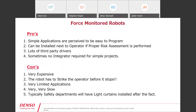Some pros to force-monitored robots: simple applications are perceived to be easy to program, they can be installed next to an operator if the proper risk assessment is performed, there are lots of third-party drivers, and sometimes no integrators are required because it's supposed to be a simple setup. The cons: they can be very expensive, the robot has to strike the operator before it stops, there are limited applications, and with heavy-payload robots you have to move very slowly because at that size hitting at any speed can cause damage. Safety departments will typically have light curtains installed after the fact when they realize it can be harmful.